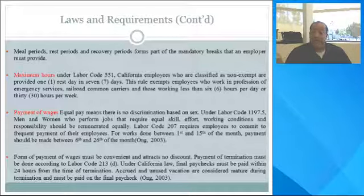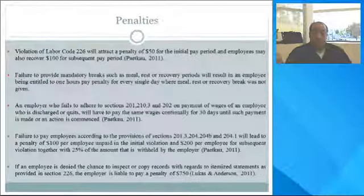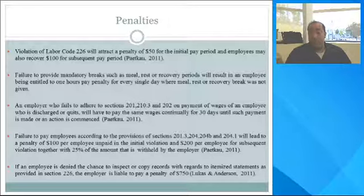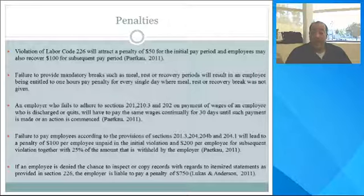We will now discuss some of the penalties associated with violating California's wage and hour laws. Violation of Labor Code 226 will attract a penalty of $50 for the initial pay period, and employees may also recover $100 for each subsequent pay period. Failure to provide mandatory breaks — such as meal, rest, or recovery periods — will result in employees being entitled to a one-hour pay penalty for every single day where a meal, rest, or recovery period was not provided.